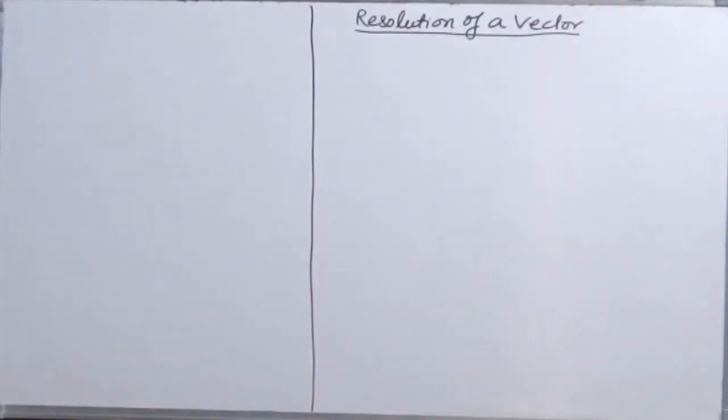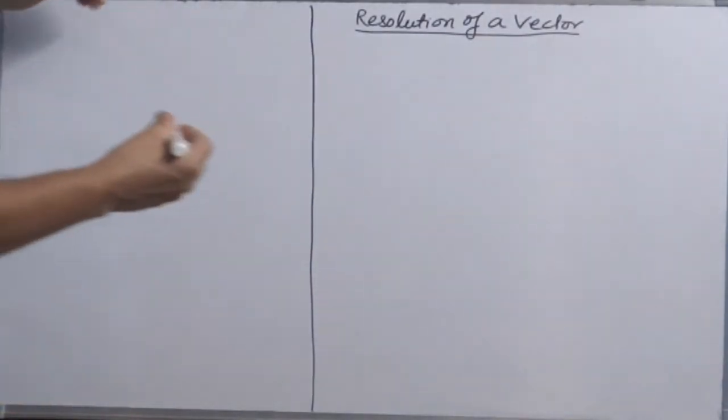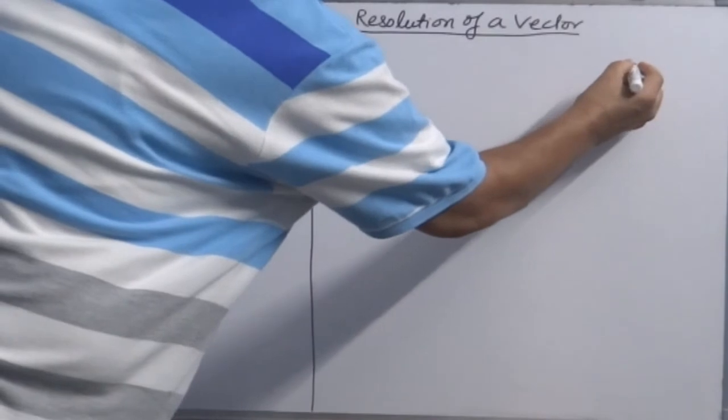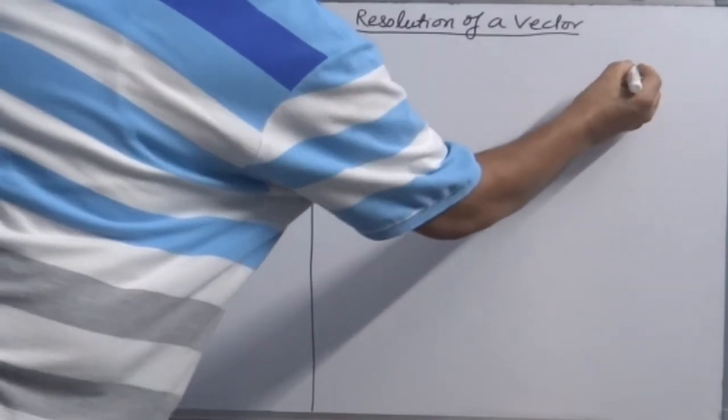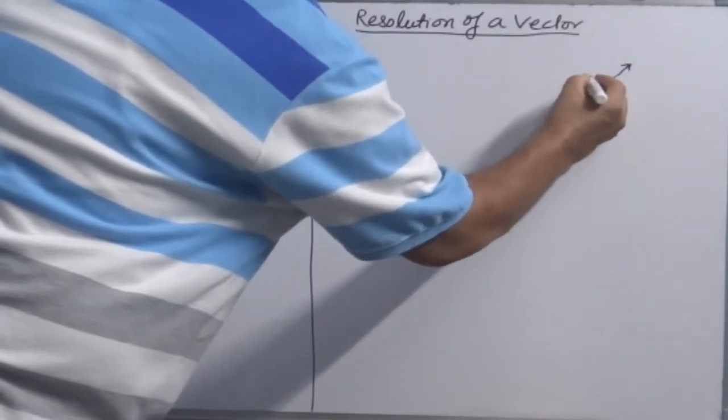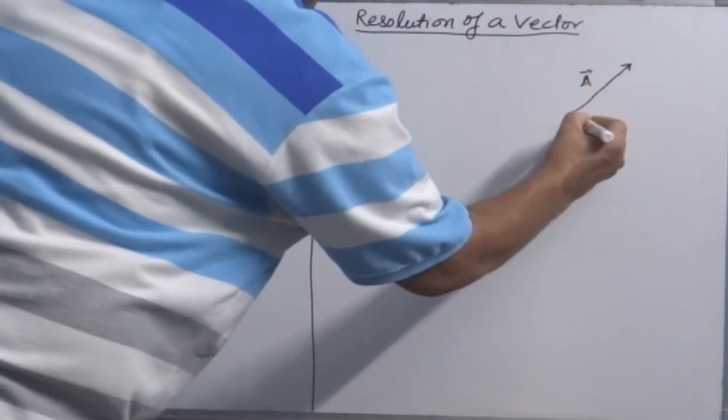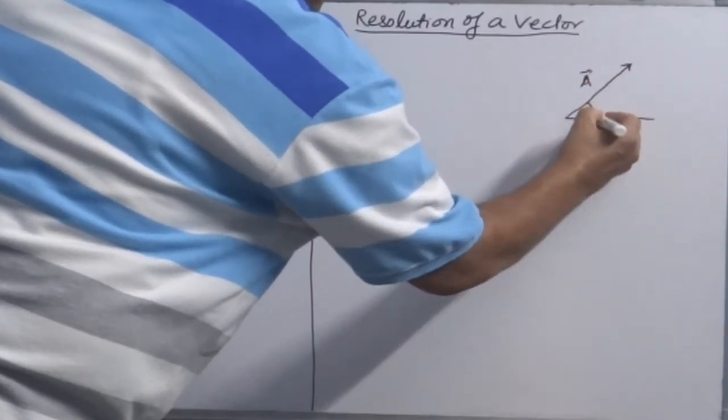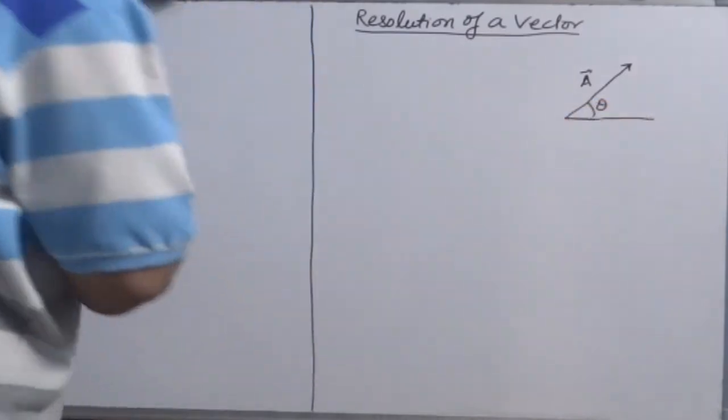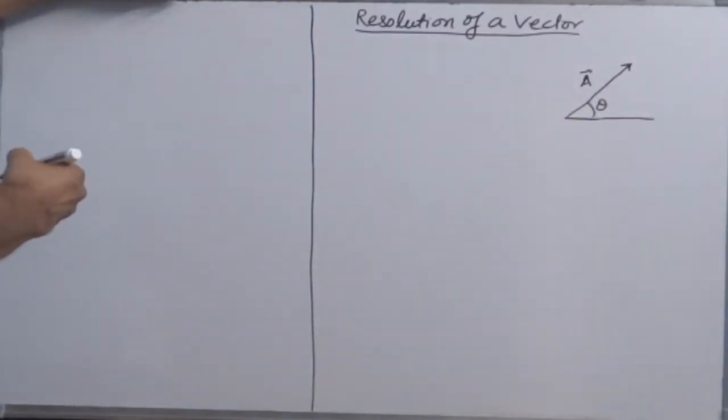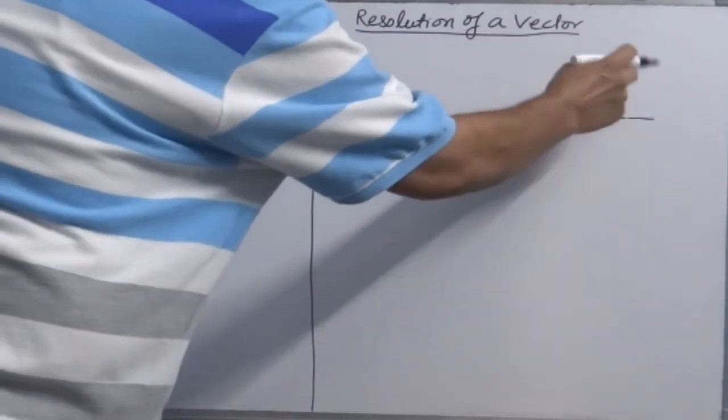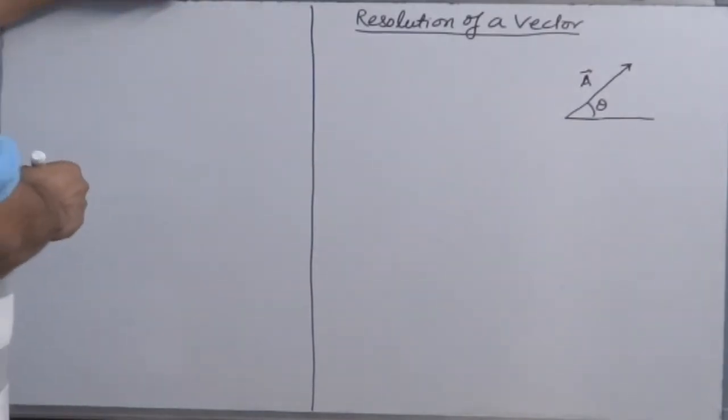In resolution of vector, we will see if a vector is given to us, how do we break up this vector into two equivalent parts? We would like to resolve this into two components. What we do?